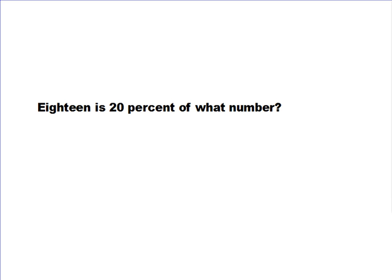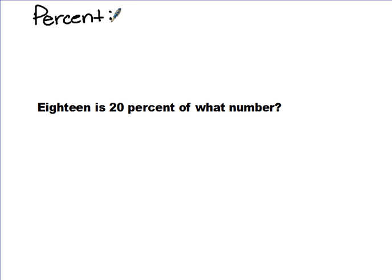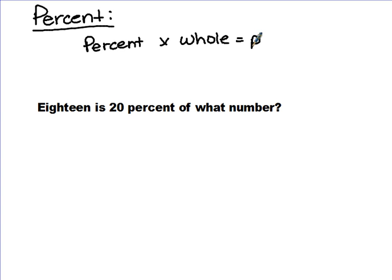Just a couple of steps before we start working through some of these problems. Percent literally means by the hundred. We know 100 to be the total when we're talking about percentages. When we solve these problems, we're going to use this formula: percent times the whole equals a part. We're going to plug percents into the percent spot, and if we're looking for a whole, we'll substitute a variable. The one thing you need to remember is you must change the percent to a decimal before solving.